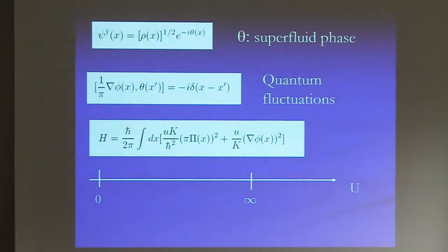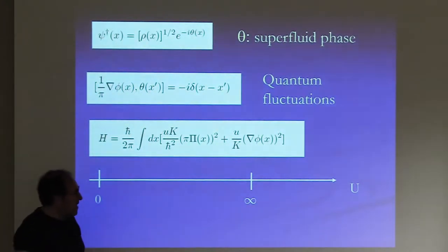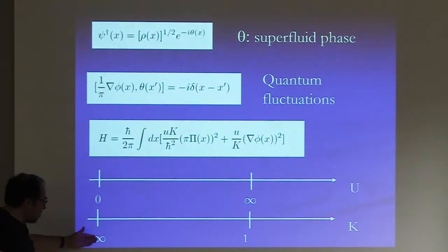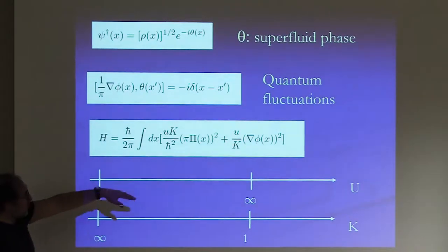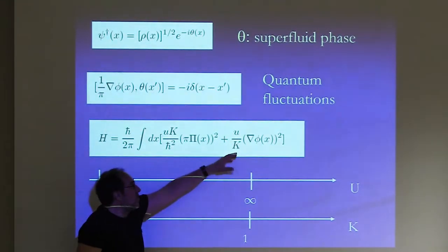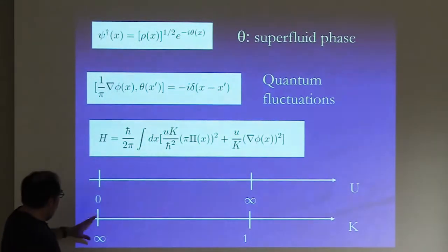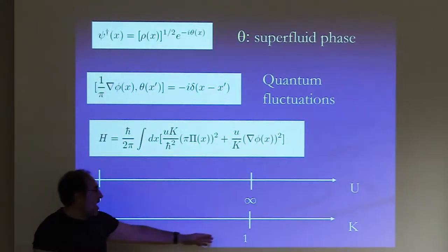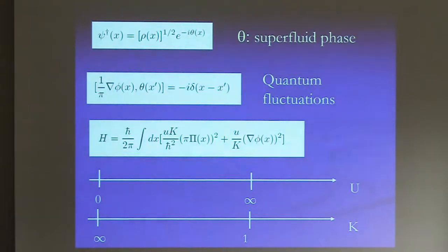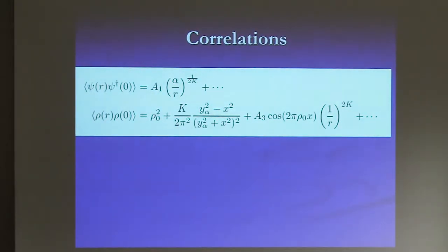Both superfluid and crystal have quasi-long-range order, and which one wins depends on K. If K is very large (weak repulsion), the superfluid correlations decay slowly and the crystal-like correlations decay fast — the system is more a superfluid. If K is very small, the crystal correlations dominate. So here is a pseudo-phase diagram: at K=1/2 there is a crossover between a system dominated by superfluidity and one dominated by charge density wave correlations.